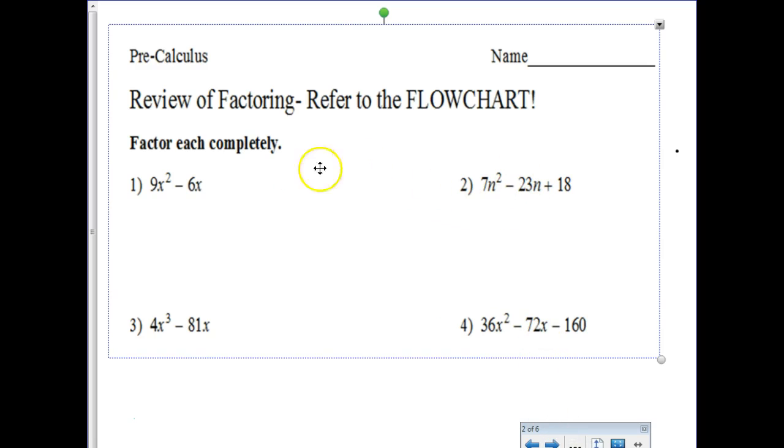At the top of the flowchart, you always start at the top of any flowchart that you see. But we're going to look for any common terms. Once we have a common term factored out, then you change your approach, whether it's a two-term or a three-term or a four-term. So when I look at number one here, I notice there is a common factor that we could take out of both 9x² and 6x. I could take a 3x out of both those terms.